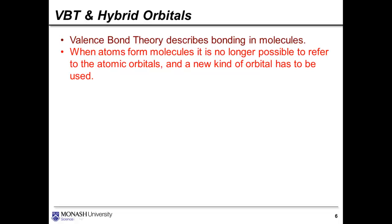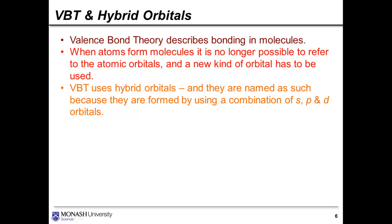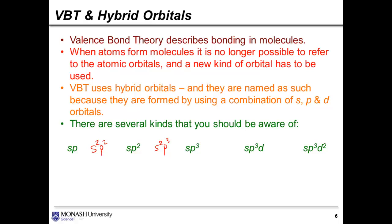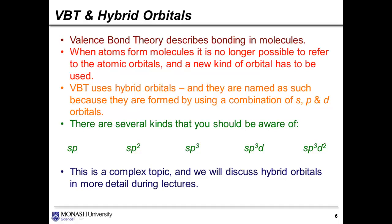When atoms form molecules, it's no longer possible to refer to the atomic orbitals. New kinds of orbitals have to be described. Valence bond theory uses hybrid orbitals, and they're named as such because they're formed by using a hybridisation or combination of S, P, and D atomic orbitals. There are several kinds that you should be aware of, and you should notice that you can't have combinations like S2P2 or S2P3, and this is for the simple reason that you only have one S atomic orbital in your valence shell. So you'll notice that there is only ever one S label in all of these examples shown here. This is a complex topic, and we'll discuss hybrid orbitals in more detail during lectures.